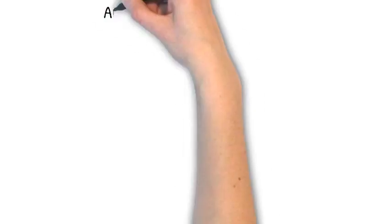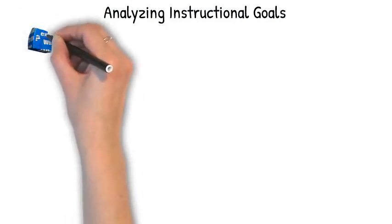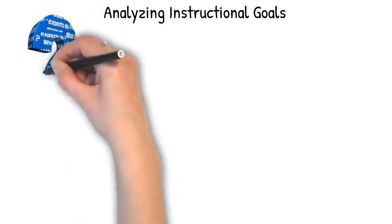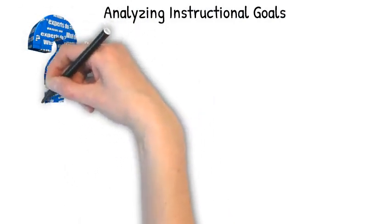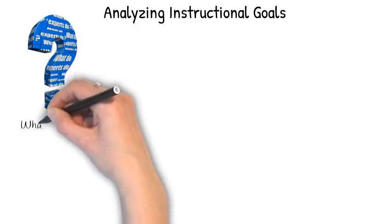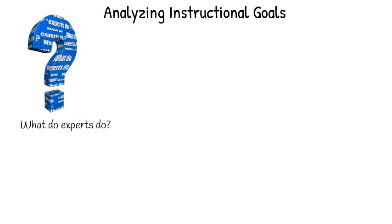After writing instructional goals, the next step in the instructional design process is to analyze these goals. Starting with a well-developed instructional goal, the next step is to ask the question: what would experts be doing in order to accomplish the goal successfully?